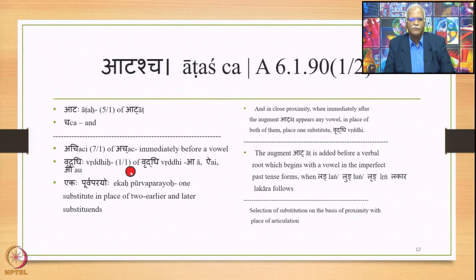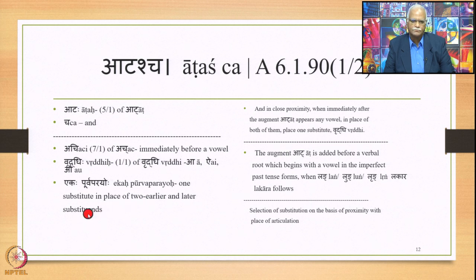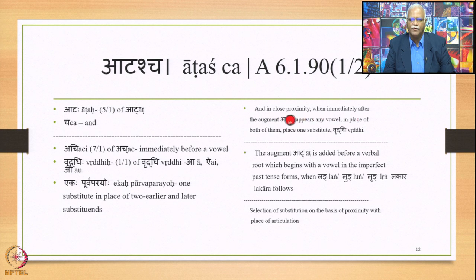Also continued is Ekapurvaparayoho — one substitute in place of two, earlier and later substituents. So the sutra Atascha means: in close proximity, when immediately after the augment Aat appears any vowel, then in place of both of them, place one substitute termed Vriddhi.